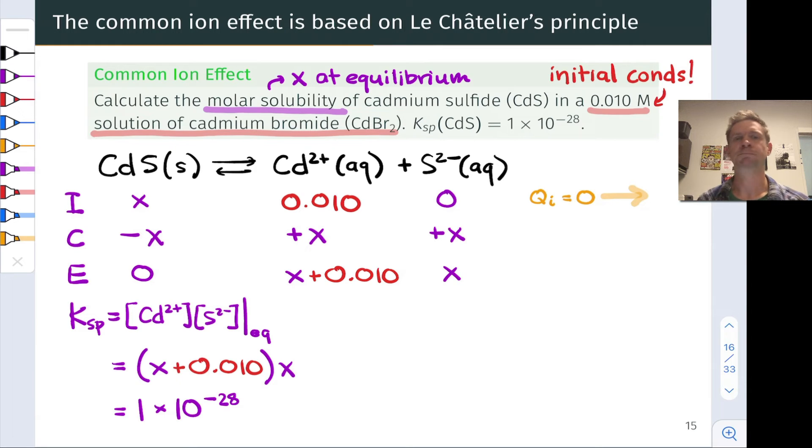And that's equal to Ksp, 1 times 10 to the negative 28th power. I'm going to make this a little bit easier to solve. You don't have to do this if you've got access to a fancy calculator or another tool that can solve this equation easily. But to make it a little bit easier, we'll realize that's a really, really tiny value of Ksp.